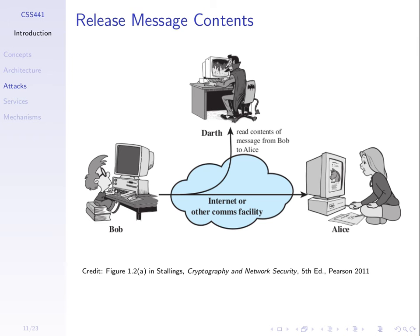The picture shows a communications facility — a computer network, the blue cloud — and some users who want to communicate using that network. The users are Bob and Alice, the normal users. For example, Bob wants to send information to Alice — say, an email.